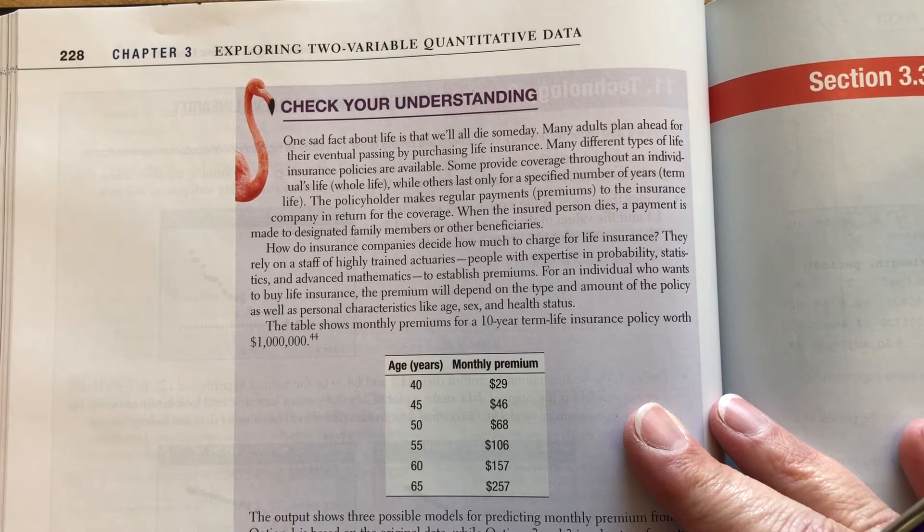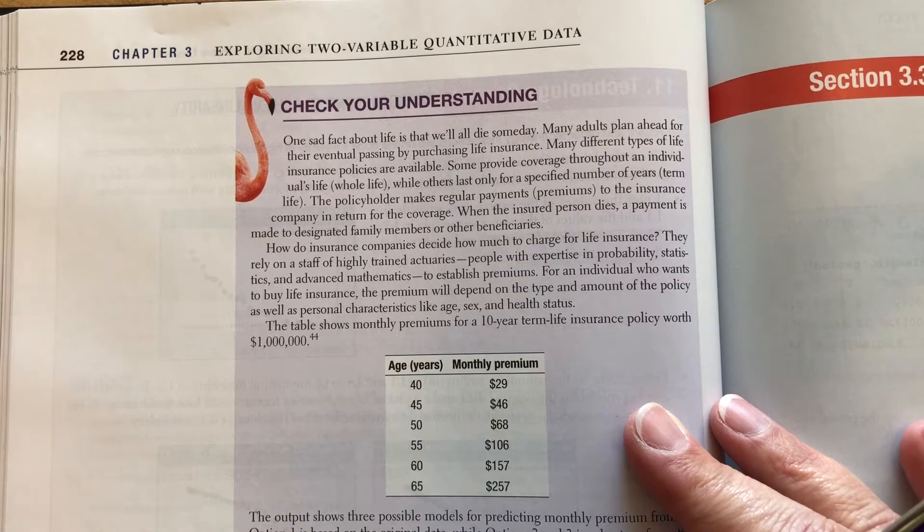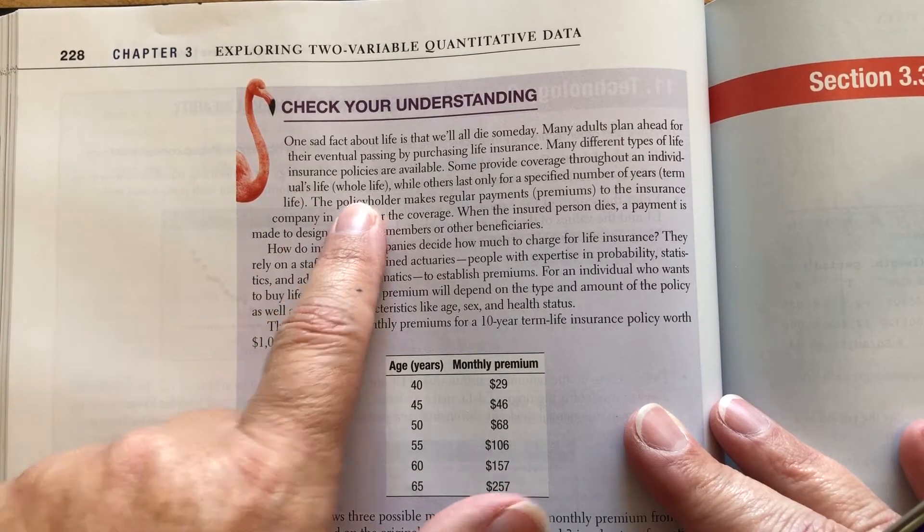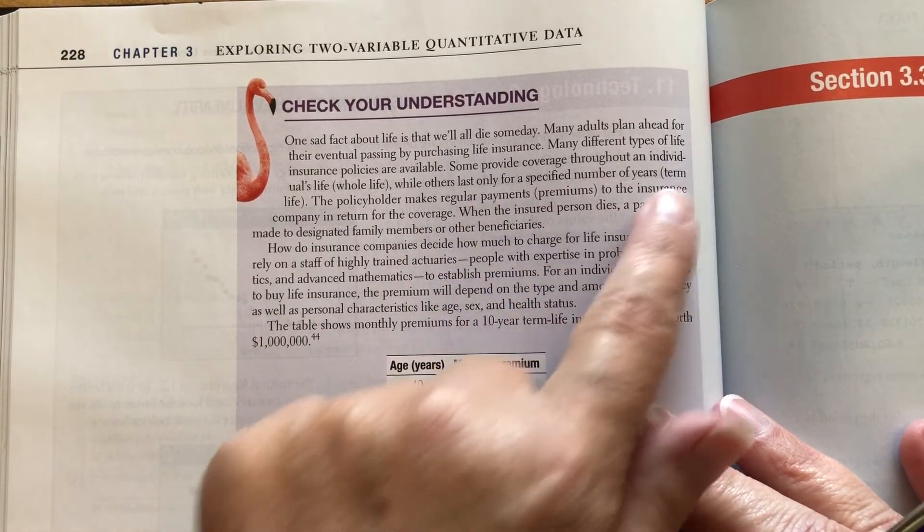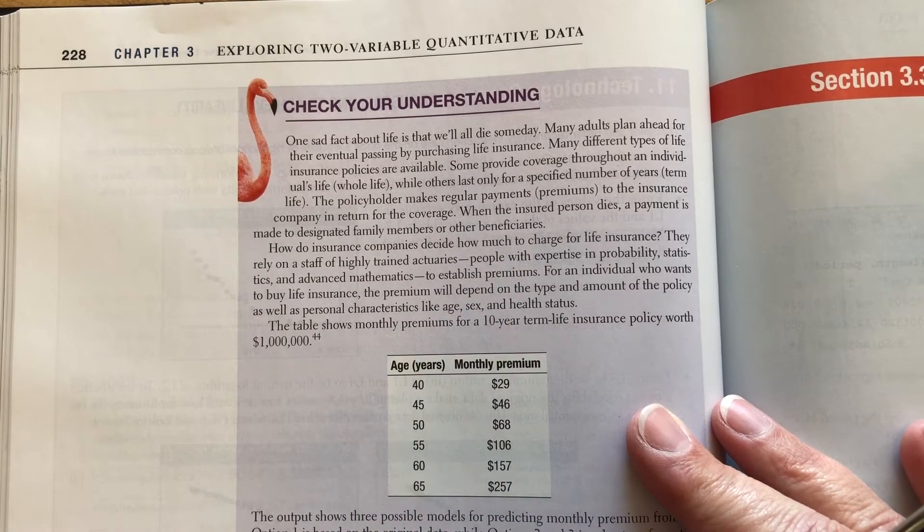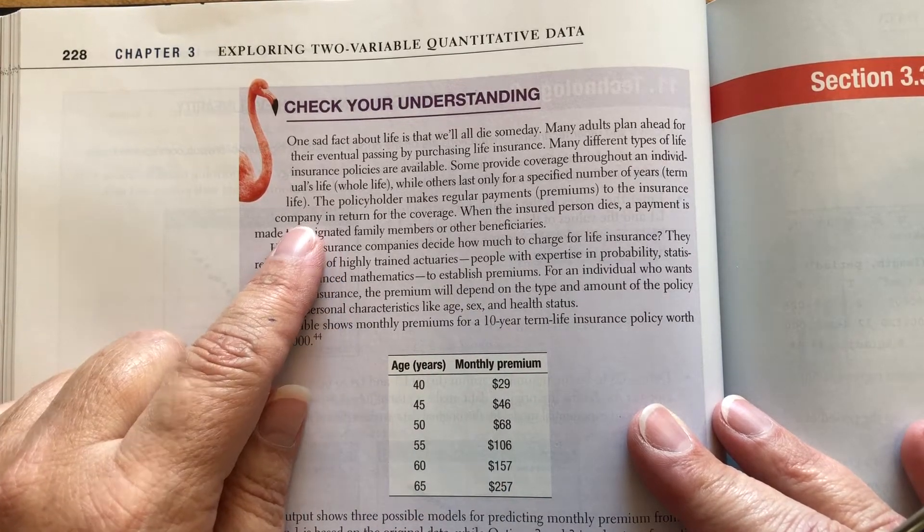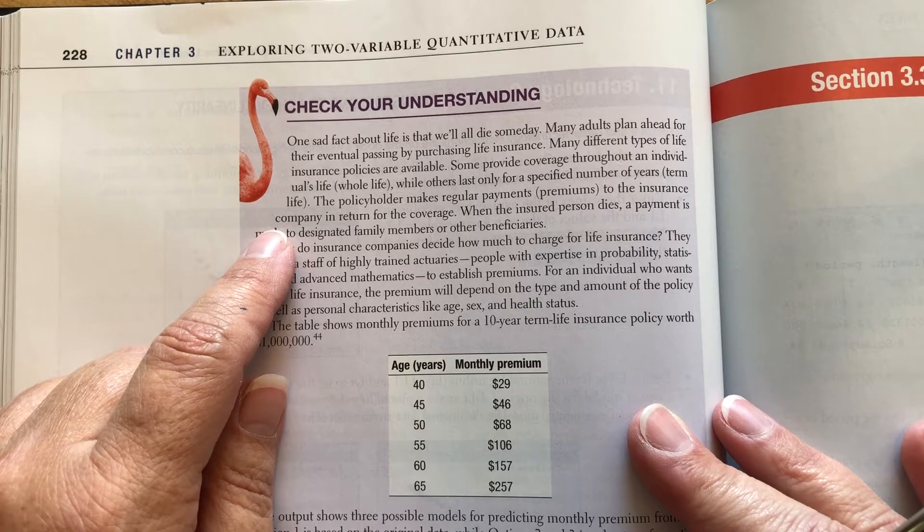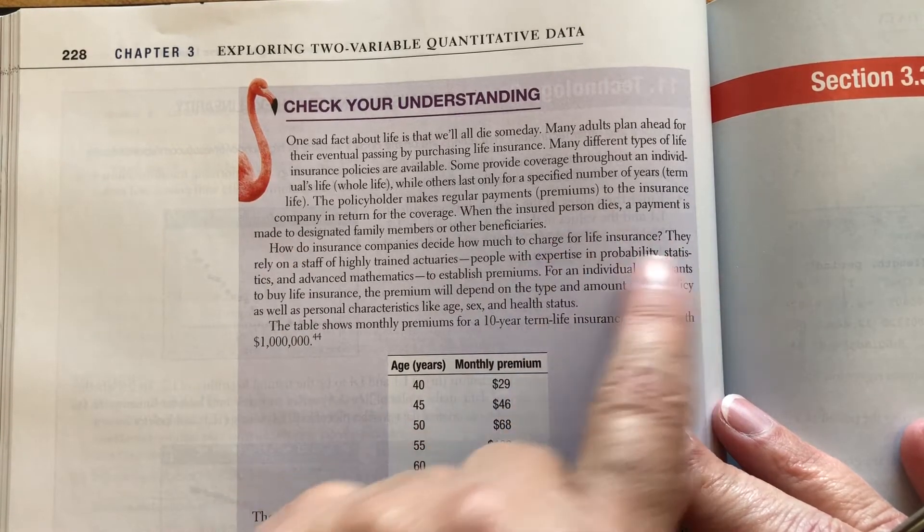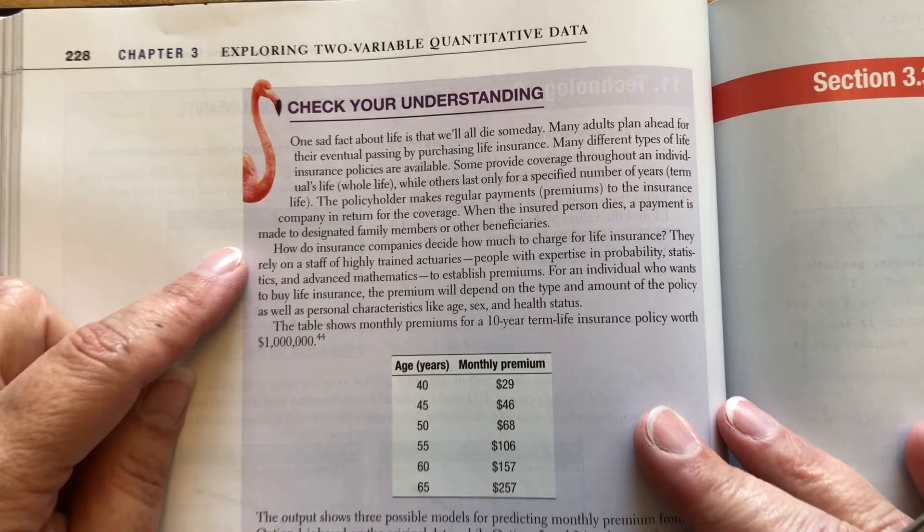Many different types of life insurance policies are available. Some provide coverage throughout an individual's life, which is called whole life, while others only last for a specified number of years, which is called term insurance. The policyholder makes regular payments, called premiums, to the insurance company in return for the coverage. When the insured person dies, a payment is made to designated family members or other beneficiaries.